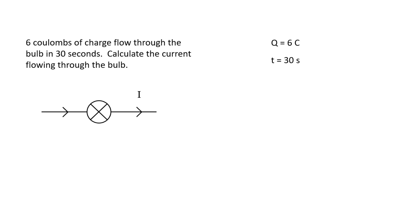In this circuit, six coulombs of charge flow through the bulb in 30 seconds, so what's the current flowing through the bulb?